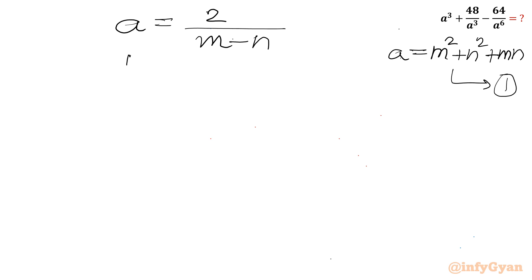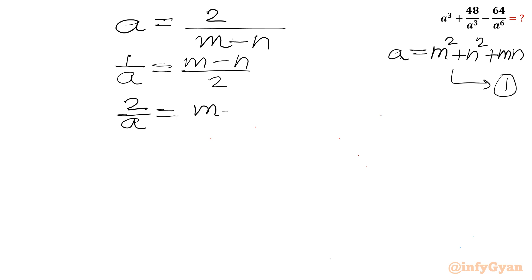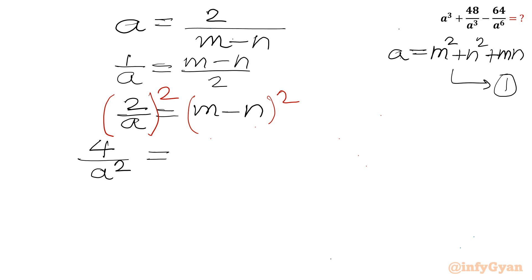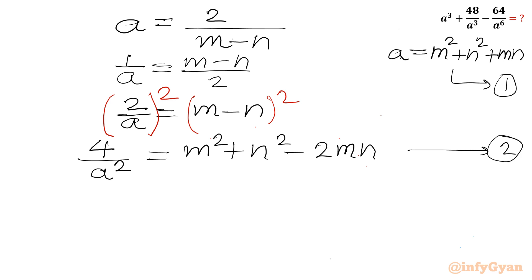Taking the reciprocal of both sides gives 1/a equals (m minus n)/2. Multiplying both sides by 2 gives 2/a equals m minus n. Now squaring both sides, the left-hand side becomes 4/a squared, and the right-hand side using the (a minus b)² formula gives m squared plus n squared minus 2mn. Let us call this equation number 2.